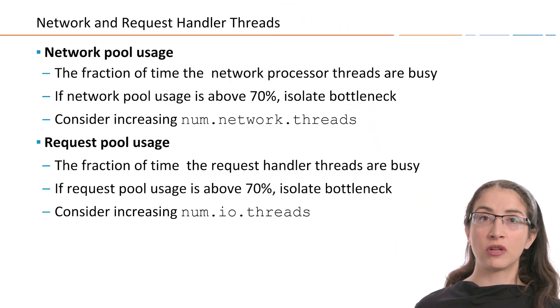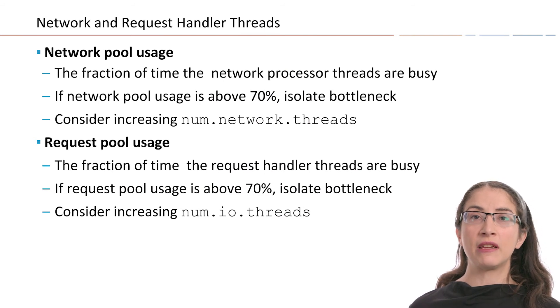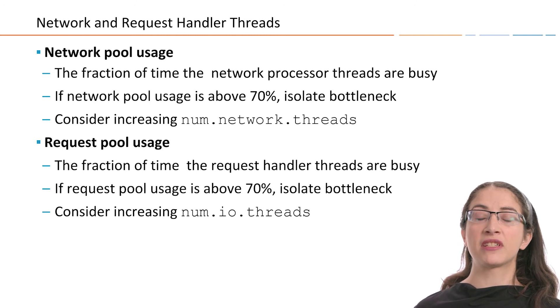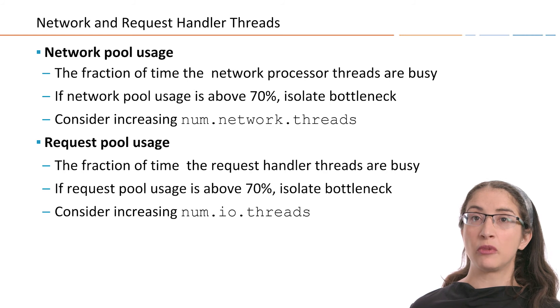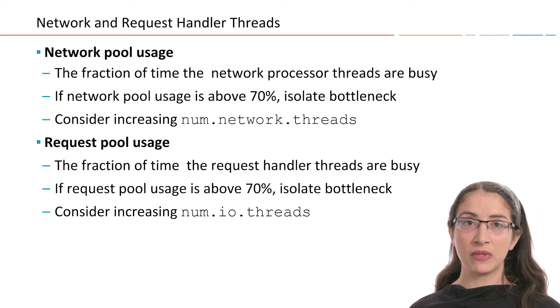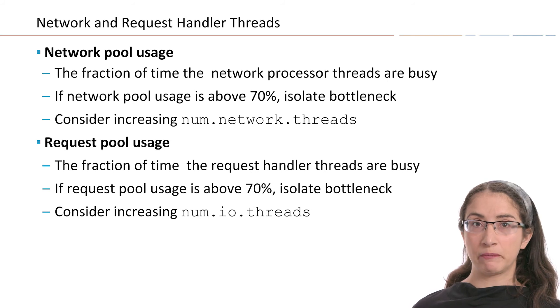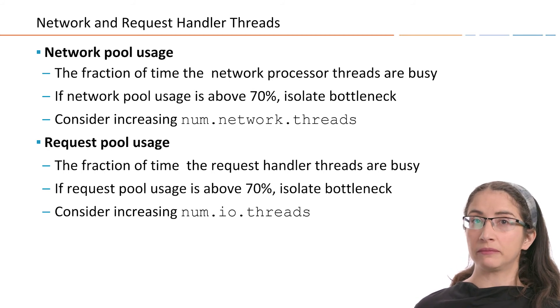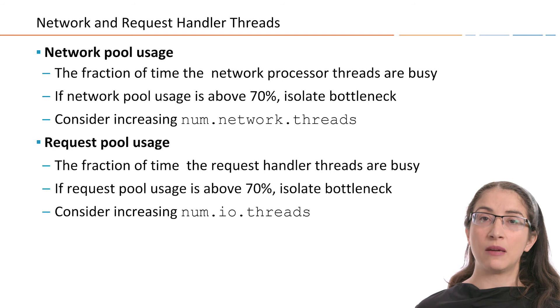After we know where time is being spent, we can check how many resources we have available, because we usually spend time waiting due to lacking resources. The two important resources to look at are network pool usage — the fraction of time in which network processor threads are busy — and request pool usage. If network threads are busy over 70% of the time, it can indicate a bottleneck leading to high queue times, so consider adding more network threads. Similarly, if request handler threads are more than 70% busy, you may have a performance problem and should consider increasing the number of threads in the pool.